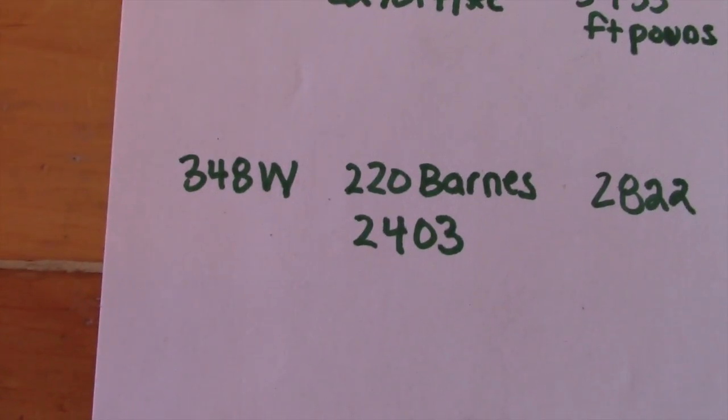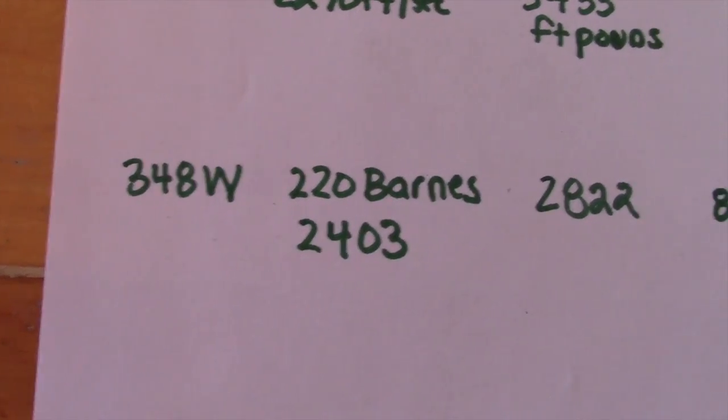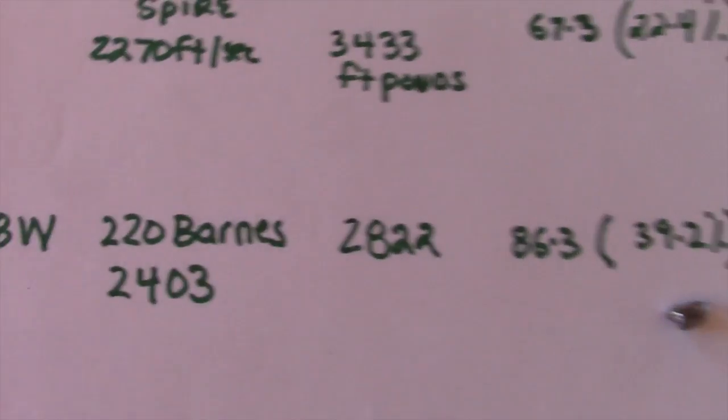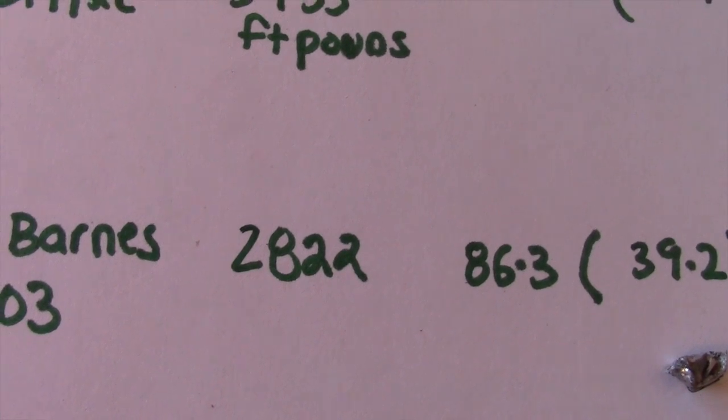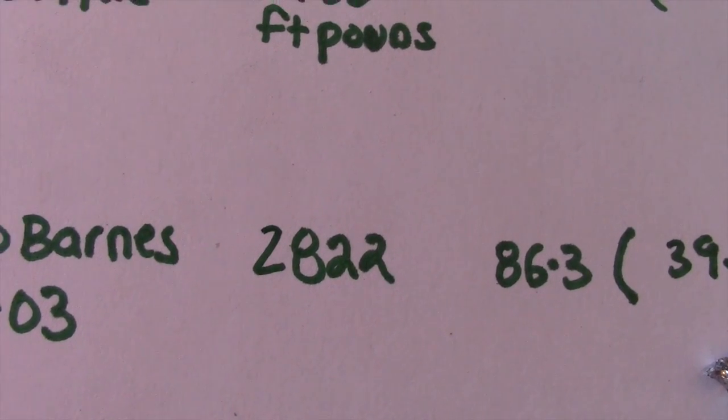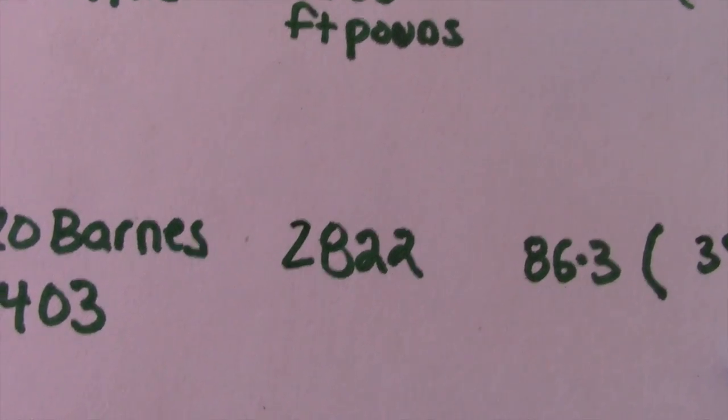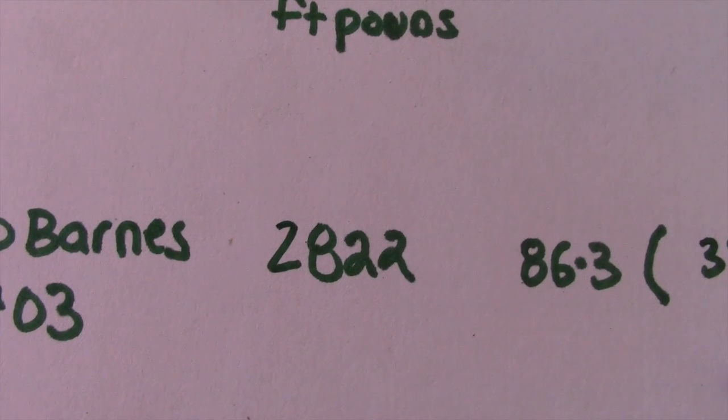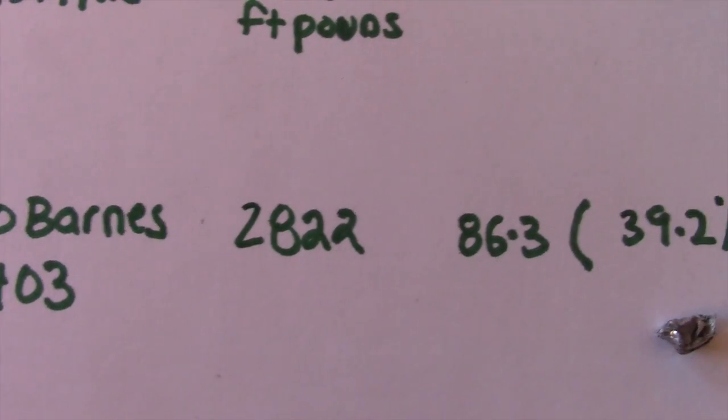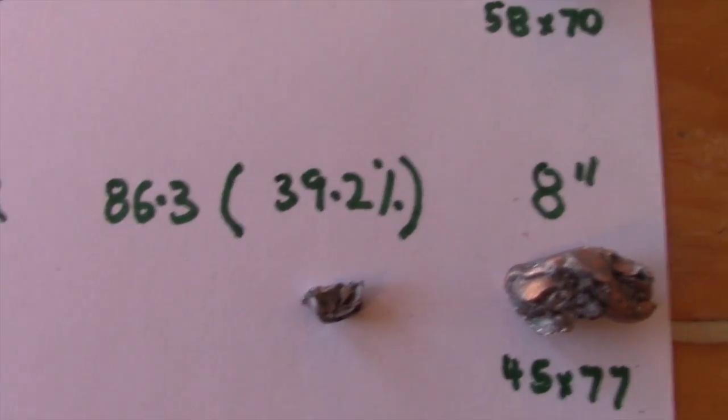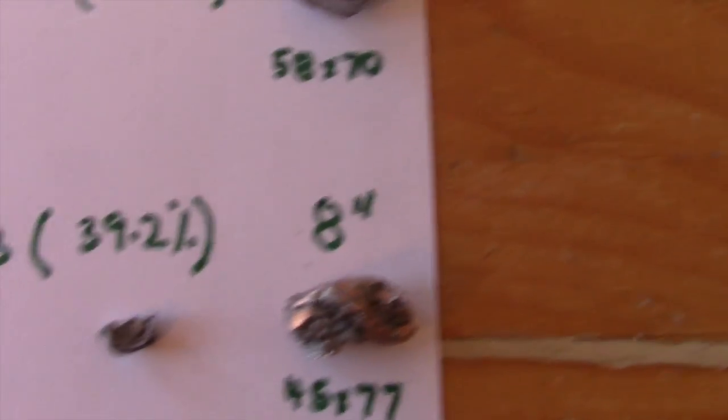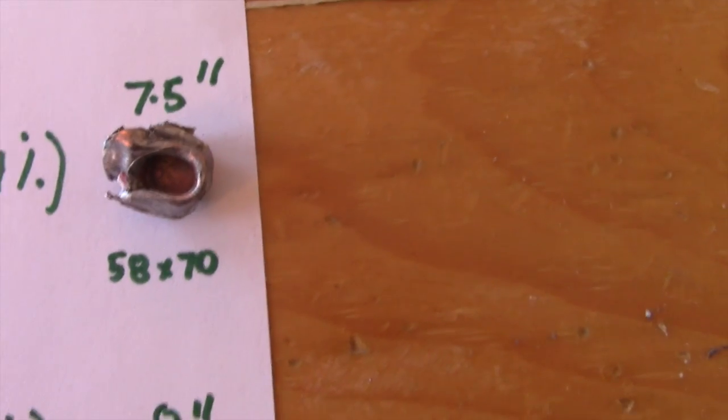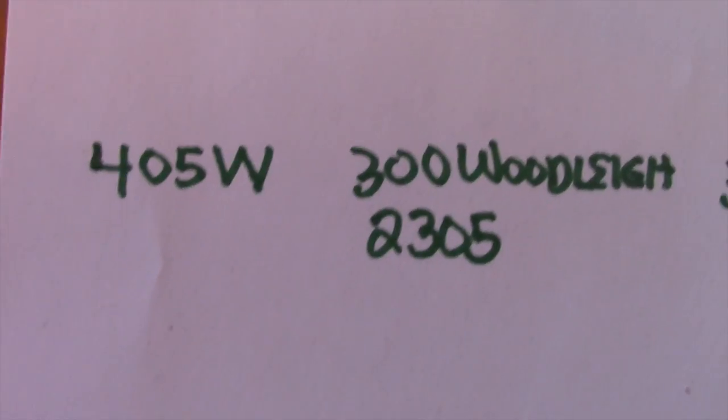The second worst penetration was .348 Winchester 220 Barnes. Going at 2403, 2822 foot-pounds. Which is just over the minimum for bison, not by a whole lot. It weighed 86.3 grains, 39.2% retained. And it went 8 inches, maybe 8.25. Hard to measure perfectly. This isn't perfect science.